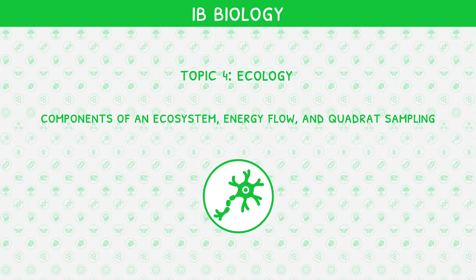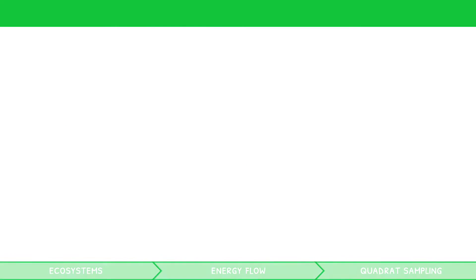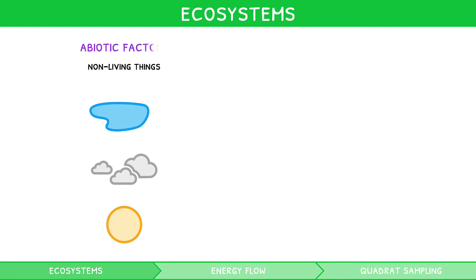Ecology is defined as the study of ecosystems. But what is an ecosystem exactly? First, we must look at what makes up an ecosystem. There are non-living things, such as water, air and the sun, which are called abiotic factors.